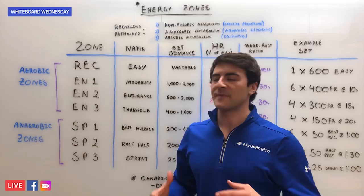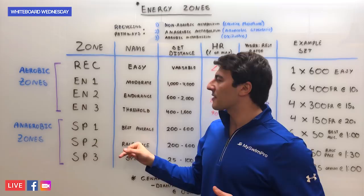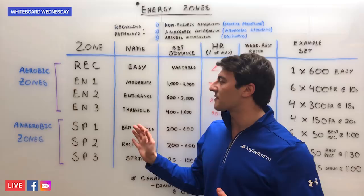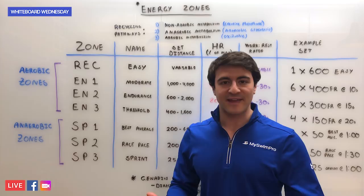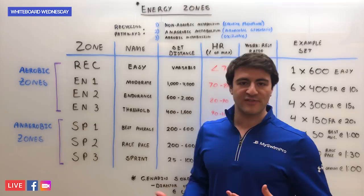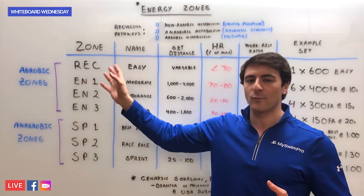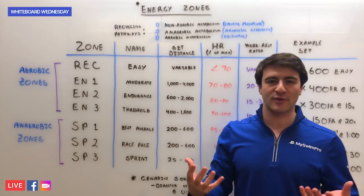To simplify this, what we've done in the MySwimPro application — and you'll often see this in sports outside of swimming — is assign a color or a different name to each of the different zones. John Urbantrak, former head coach of the University of Michigan, decided to assign colors to each zone so that athletes can have a better understanding of which zone they should be hitting in a particular swim set. The naming conventions we have in the MySwimPro application: recovery is simply called Easy, and the distance is variable.